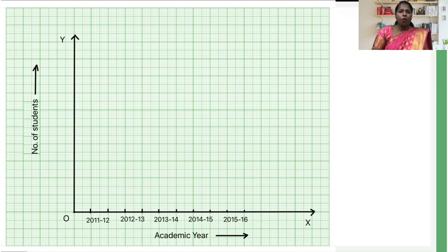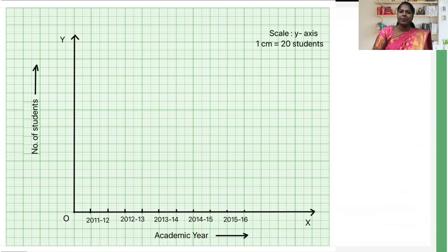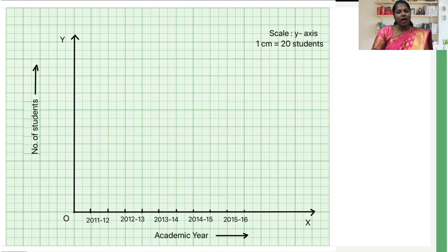In step 4, we will choose a suitable scale along the vertical axis OY. For this example, we will take the scale as 1 cm equal to 20 students, so one small division will be equal to 2 students. Please note you can choose a suitable scale based on the given data values. Remember, the scale provides us with the convenience to draw the bar graph.